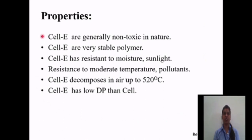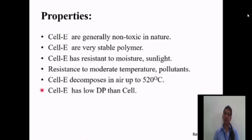Properties of cellulose ether: Cellulose ethers are generally non-toxic in nature and are very stable polymers. They have resistance to moisture, sunlight, moderate temperature, and pollutants. Cellulose ether decomposes in air up to 5–20 degrees Celsius. Cellulose ether has a lower degree of polymerization (DP) than native cellulose.